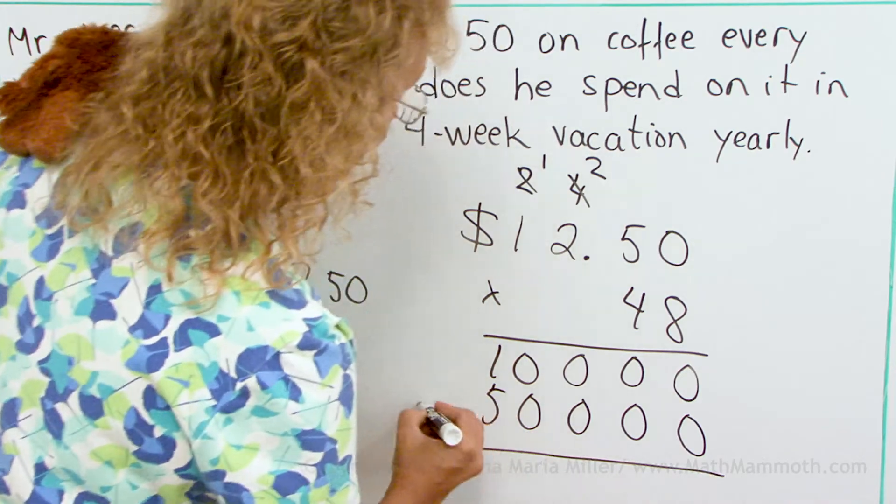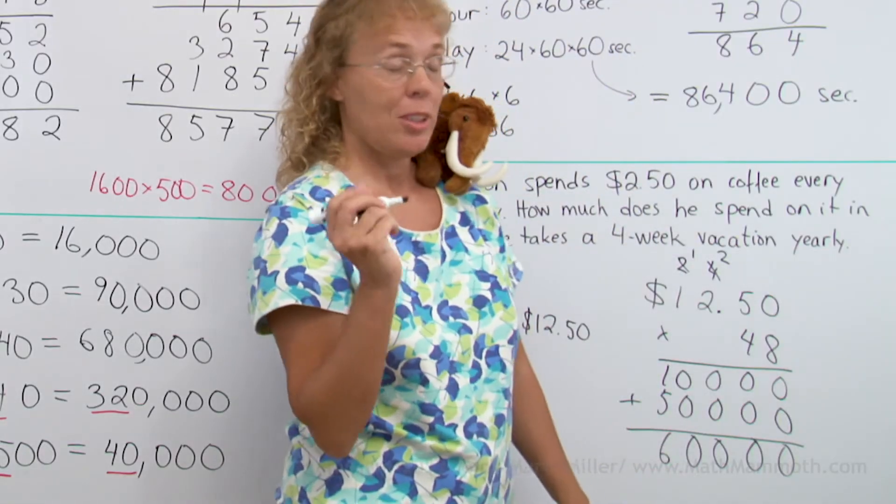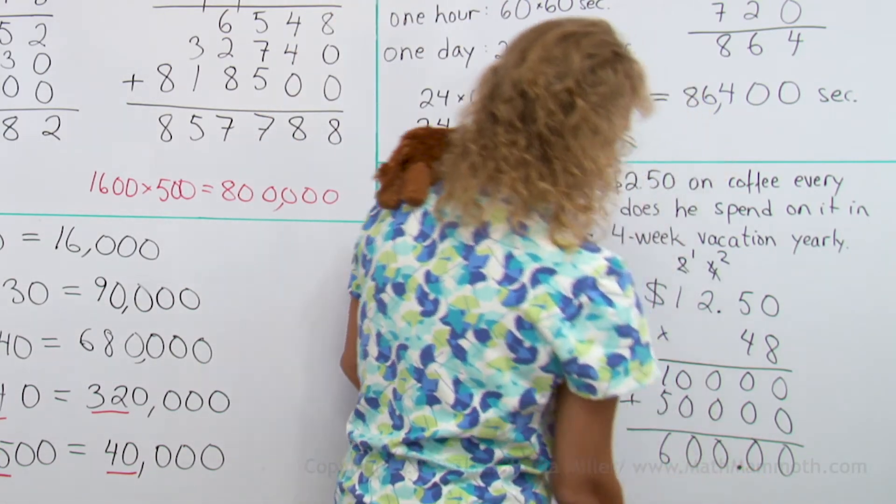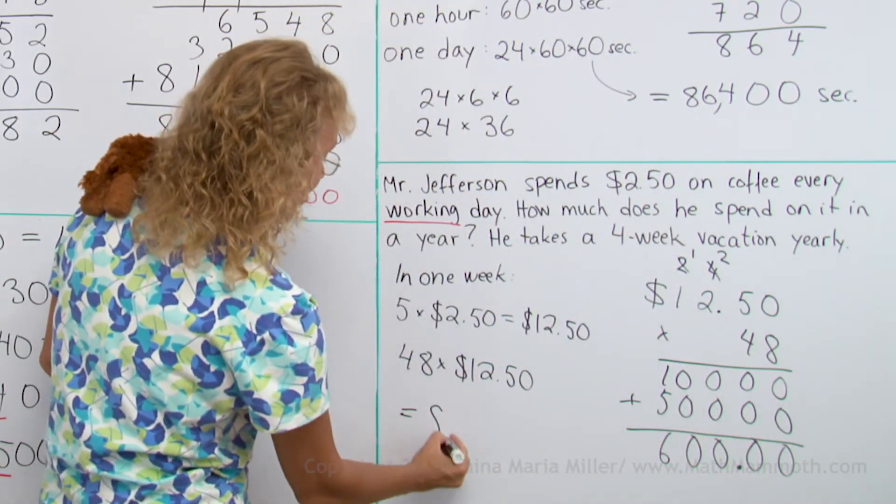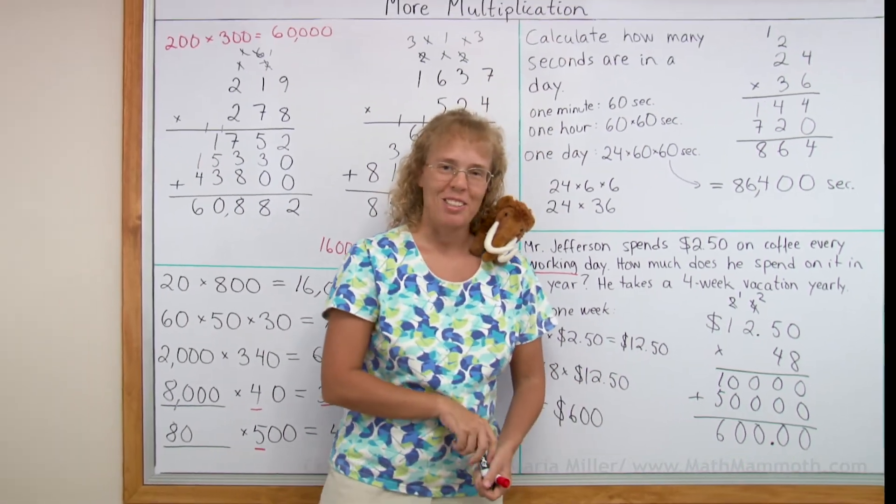At least it's very easy to add. And then a decimal point, right? So he spends exactly $600 on coffee every year. Okay, we're all done with this lesson.